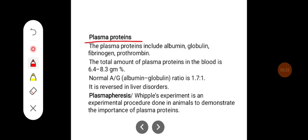Plasma proteins include albumin, globulin, fibrinogen, and prothrombin. The total amount of plasma protein in the blood is 6.4 to 8.3 gram percent. The normal albumin-globulin ratio is 1.7 to 1, and this ratio is reversed in case of liver disorders as albumin synthesis is decreased in liver disease.